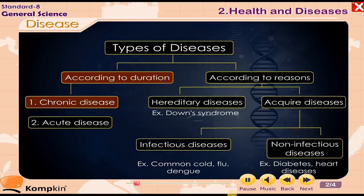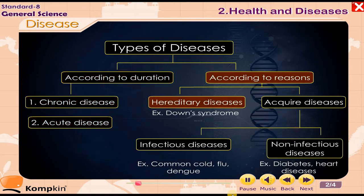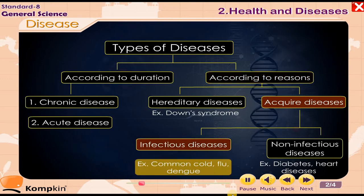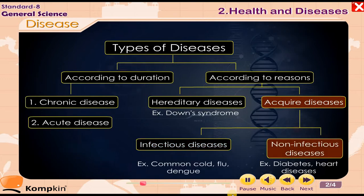1. Chronic disease. 2. Acute disease. According to reasons: Hereditary diseases — example, Down's syndrome. Acquired diseases: Infectious diseases — example, common cold, flu, dengue. Non-infectious diseases — example, diabetes, heart diseases.